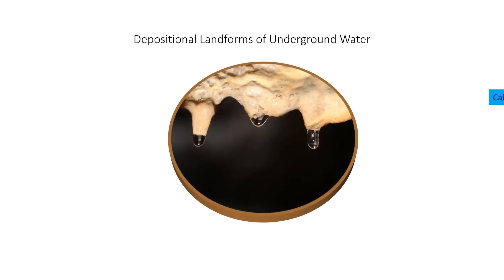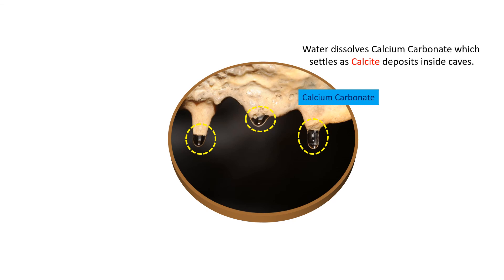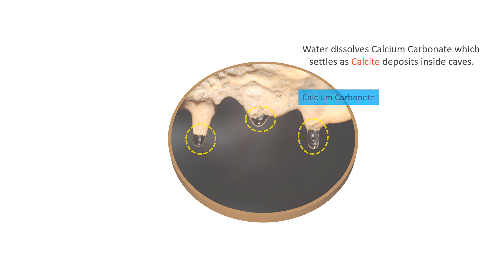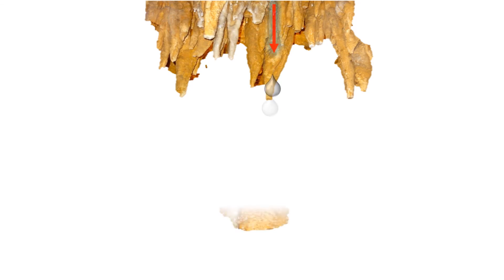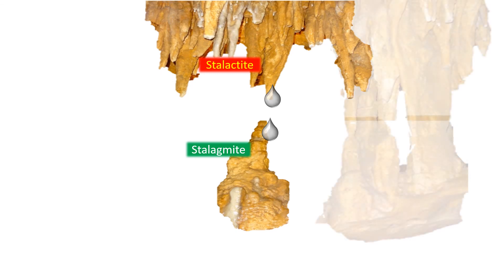Depositional landforms of underground water: calcium carbonate is a mineral found in limestone. When it gets dissolved in water, peculiar features are formed on the ceiling, floor, and walls of caves. When calcite deposits are formed on the ceiling of caves, they are called stalactites. Deposits found on the floor are called stalagmites.